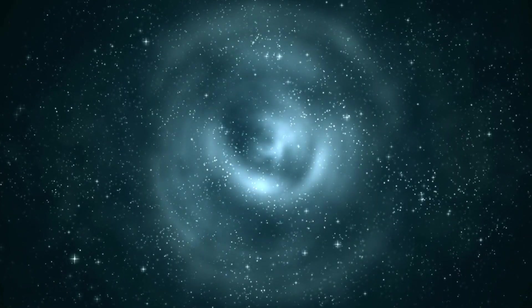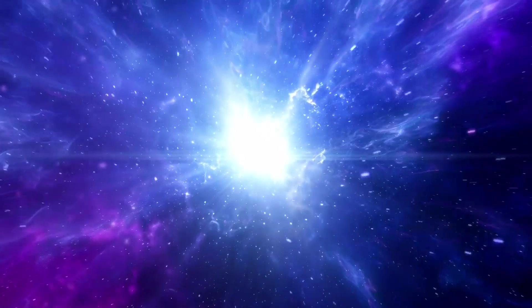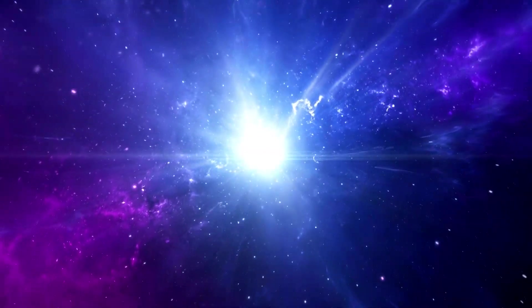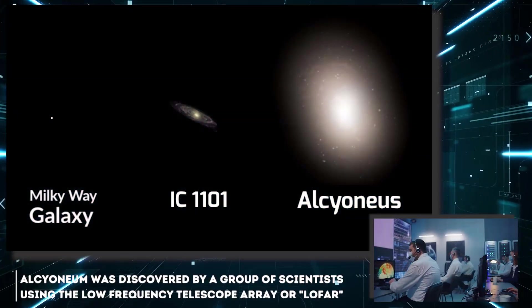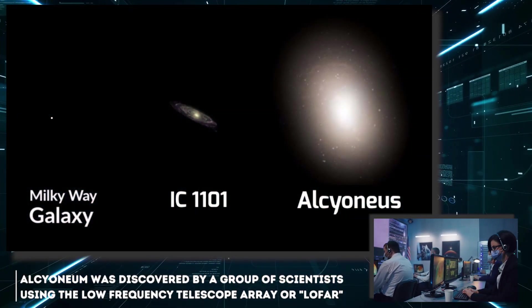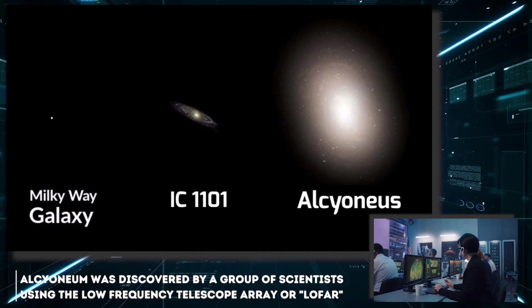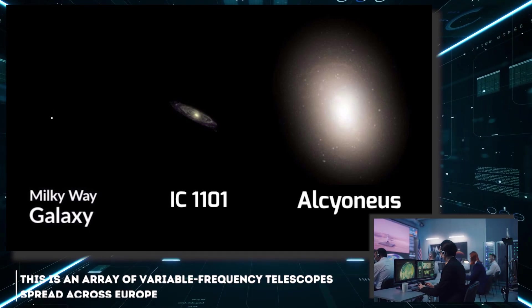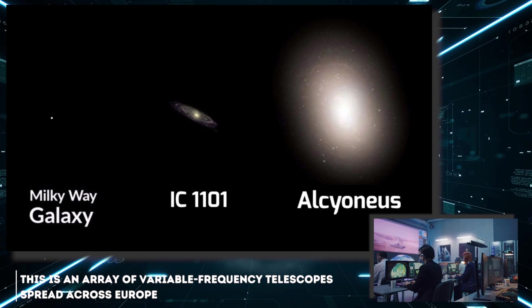Simply put, the galaxy is an ecosystem in itself where a constant cycle of creation and destruction is repeated and respected. At the time, Alcinean was discovered by a group of scientists using the Low Frequency Telescope Array, or LOFAR. This is an array of variable frequency telescopes spread across Europe.